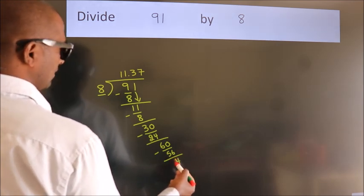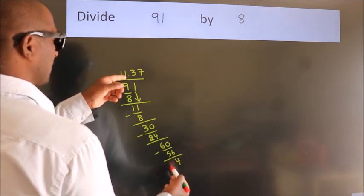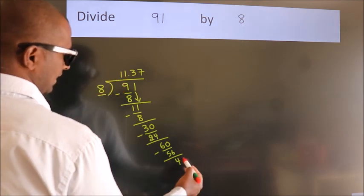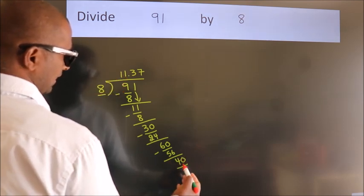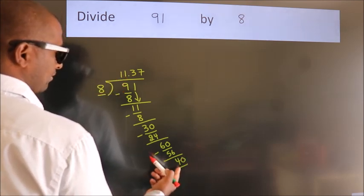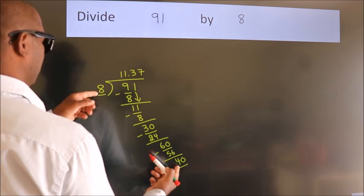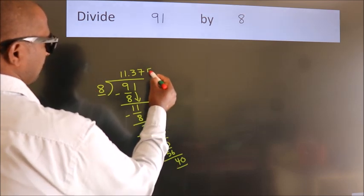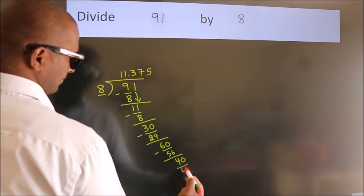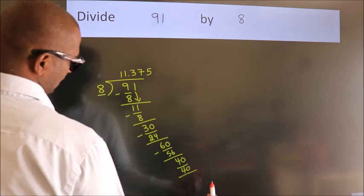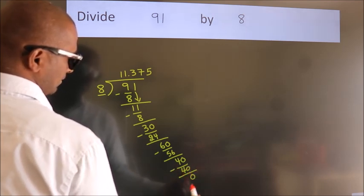After this, we already have the decimal. So, directly take 0. So, 40. When do we get 40? In 8 table, 8 fives, 40. Now, we subtract. We get 0.